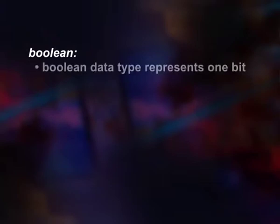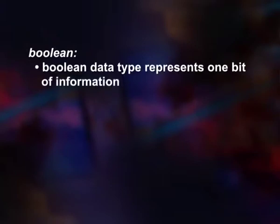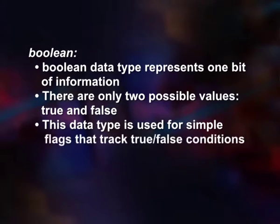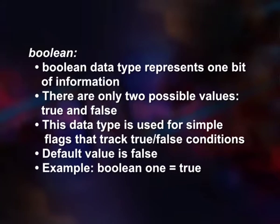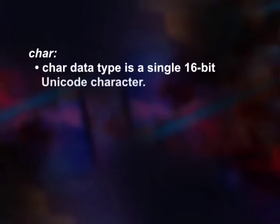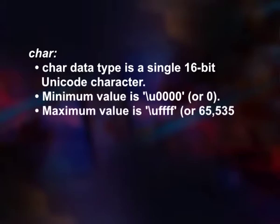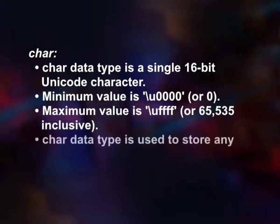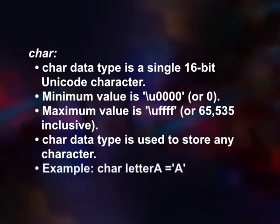Boolean — represents 1 bit of information with only two possible values: true and false. This data type is used for simple flags that track true or false conditions. Default value is false. Char — a single 16-bit Unicode character, minimum value \u0000 (or 0), maximum value \uFFFF (or 65535 inclusive). Character data type is used to store any character. Example: char letterA = 'A'.